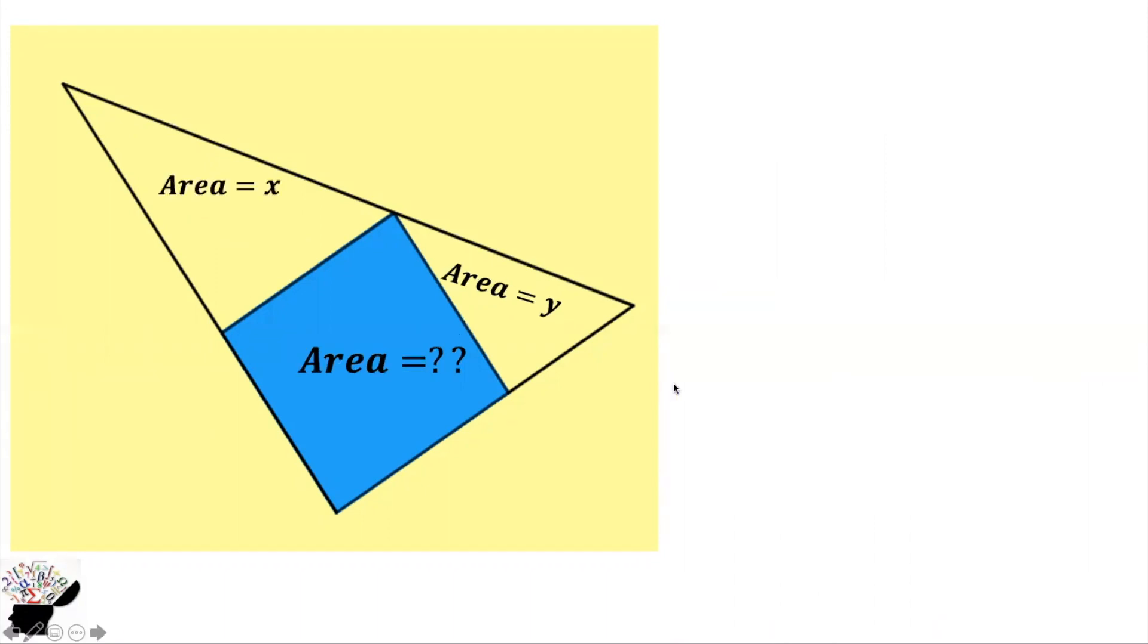First of all, we can label some of the angles. This one can be theta, and this one would be beta. If this side is 90, this angle would be beta. If this side is beta and this angle is 90, then this side is theta.